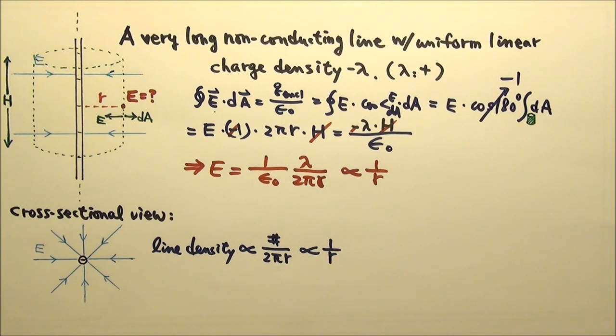Another thing is, in reality, we don't usually have very long lines of charge. But if the distance here is much smaller compared to the length of the line, and we stay near the middle of the line, this method would give us a very good estimate on the electric field calculation.